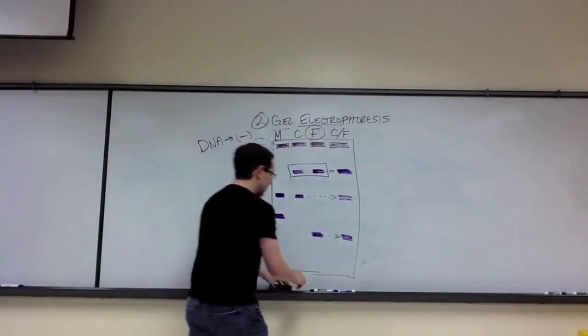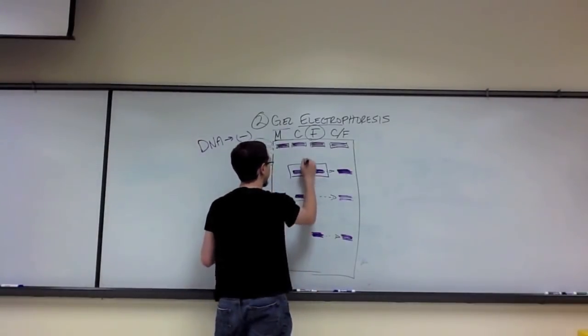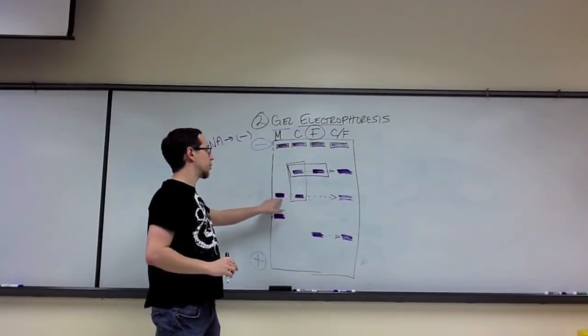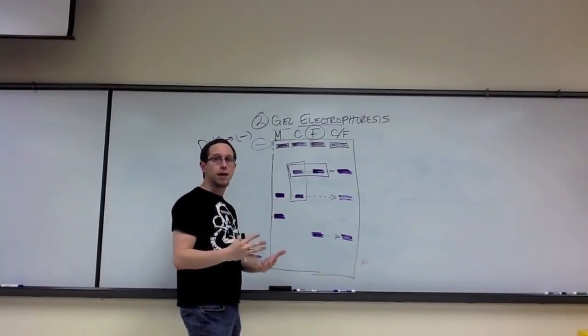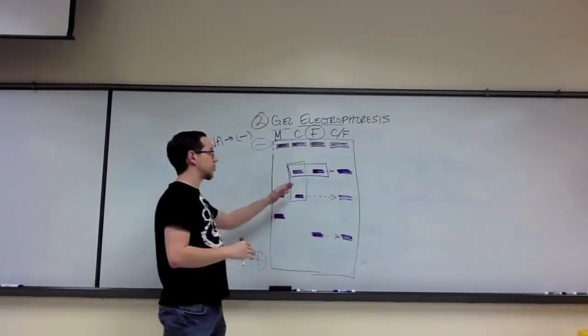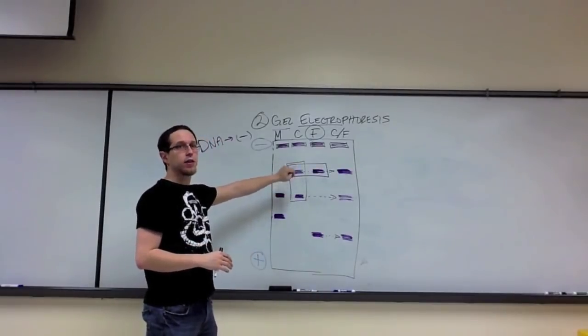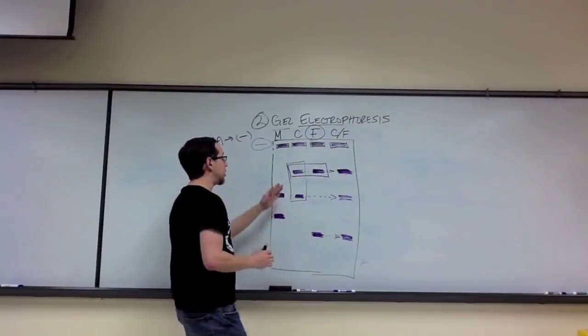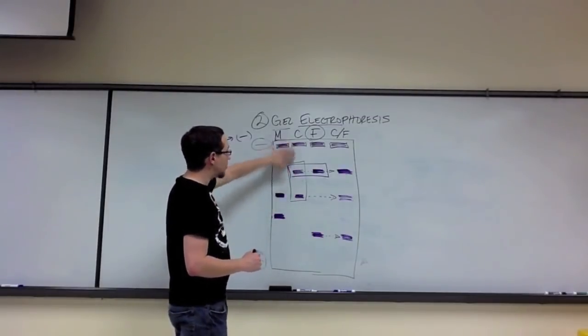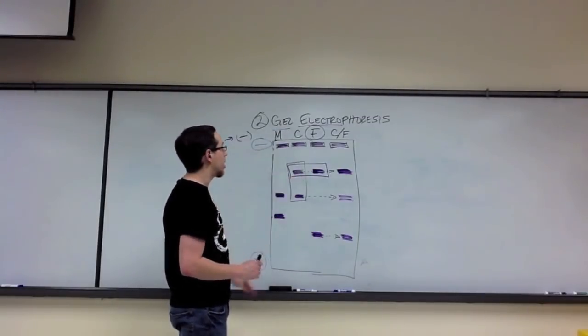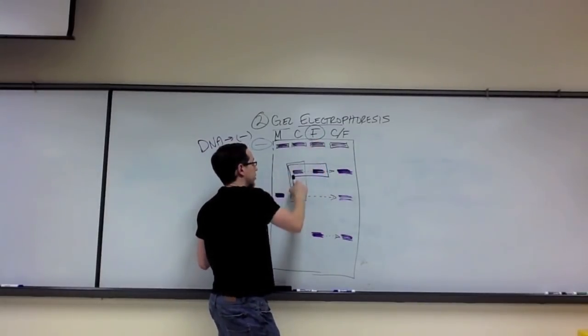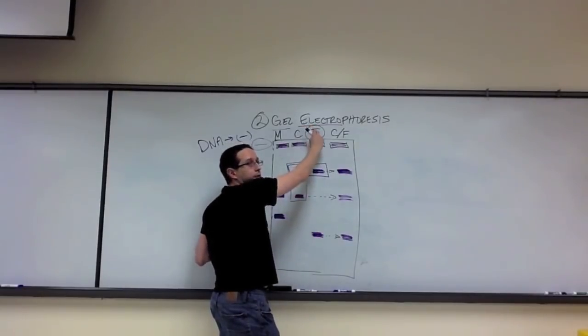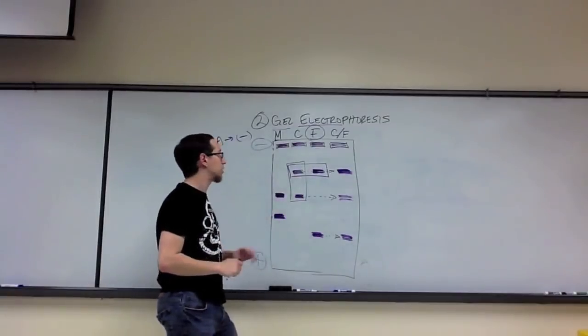Now, in this particular instance, the child only had two bands, and the child shared one with the mother and one with the father. What if the child had had four bands? Then the child would have actually shared two with the mother and two with the father. It's always half and half. You need to first verify how many bands are in the child's lane before you start trying to figure out if this particular individual is or is not the father. Because if the child had four bands but only one of those bands matched with this particular person, this person is most likely not the father of that child.